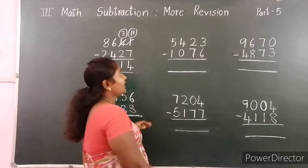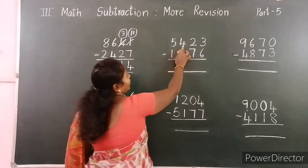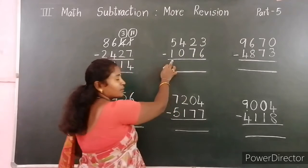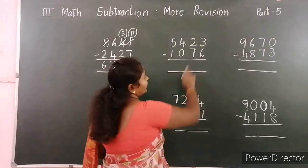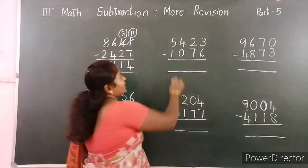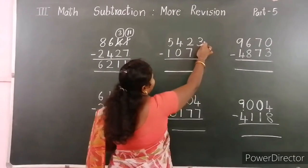Let's move. One more example: 5,423 minus 1,076. Start from the ones place.